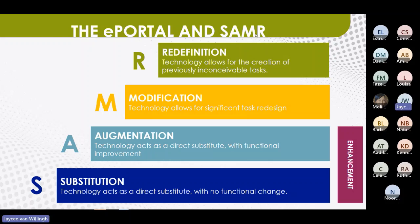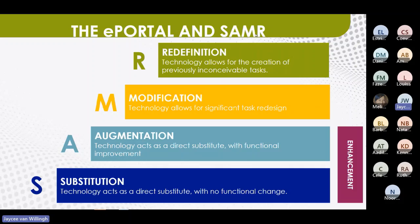Let's start at the bottom: Substitution. This is when technology acts as a direct substitute with no functional change — you substitute something with technology but it doesn't change how the classroom functions. Everything will still basically be the same. The next step is Augmentation, where technology now has a functional improvement in the classroom — instead of just being a direct substitute, it now improves certain things. That leads into Modification, which allows for a significant task redesign — basically changing the way you do things in the classroom.